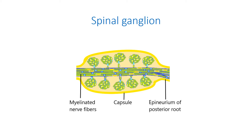The capsule continues into the epineurium of the posterior root and spinal nerve. The cells are located on the periphery of the ganglion. The nerve cell processes, mostly myelinated ones, are located in the central part.